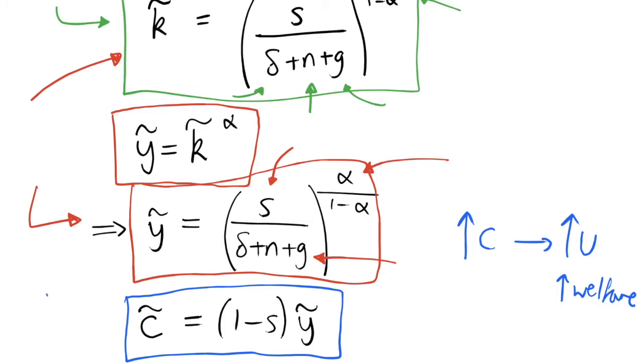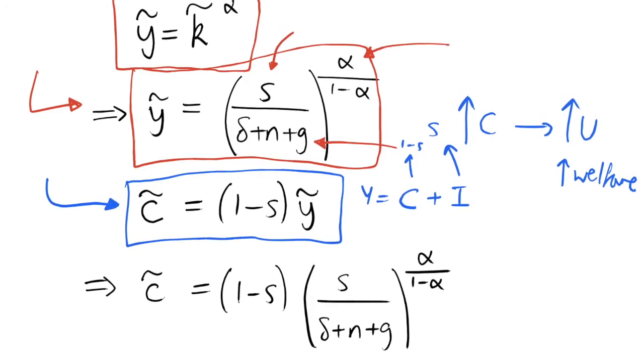So we know that consumption is just going to be equal to this constant fraction of the output because we have assumed that our output is given by national income identity, consumption plus investment. And some fraction of that is saved and everything else is multiplied by 1 minus s and everything else is consumed.